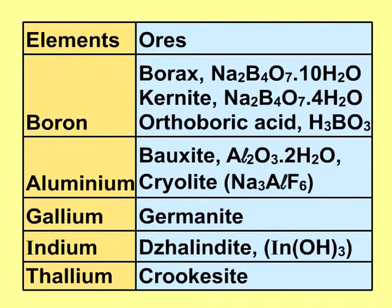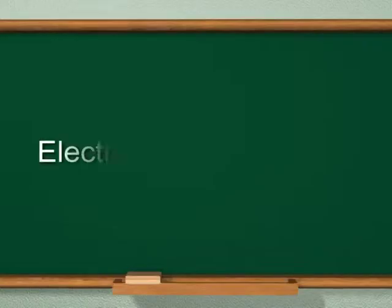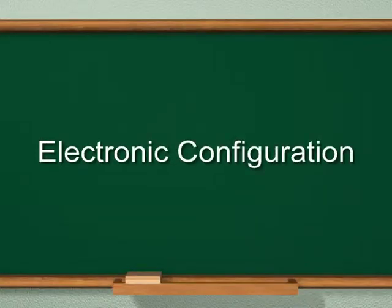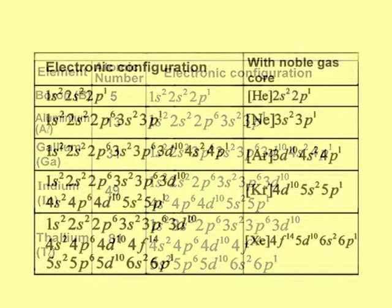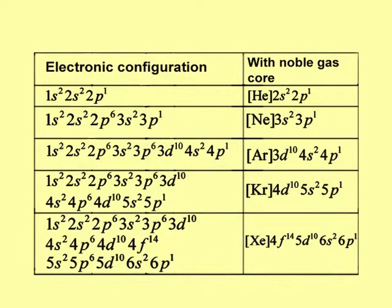The ore of thallium is crookisite. Now, let us look at the table showing group 13 elements, their atomic numbers, their electronic configurations, and their electronic configurations with noble gas core.